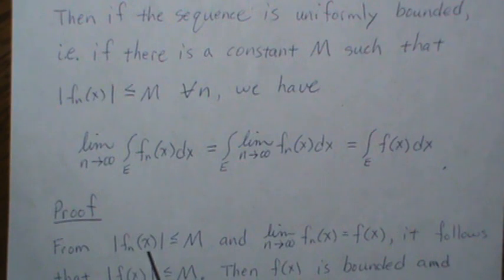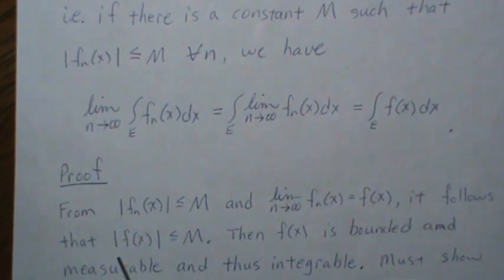So we know f is uniformly bounded by M and that this limit goes to f, then it follows that f is less than M.